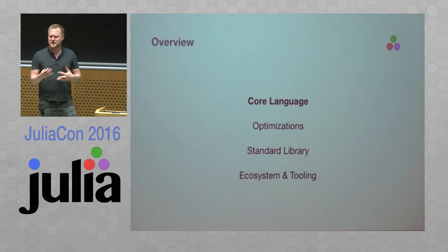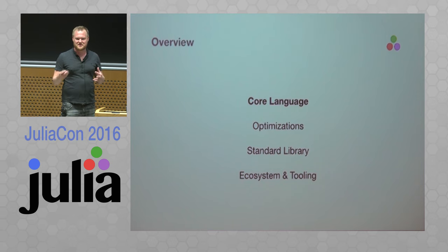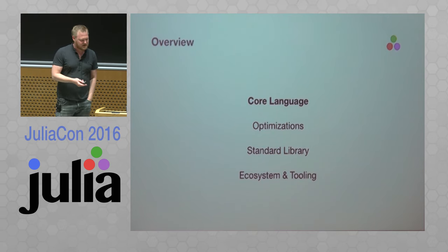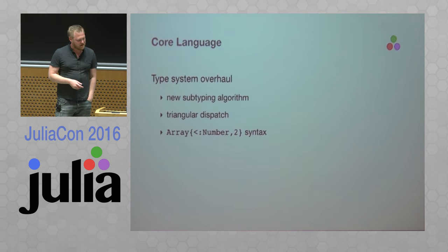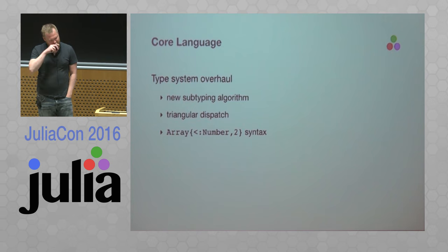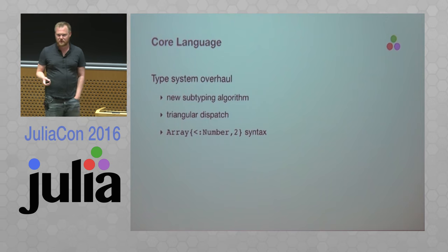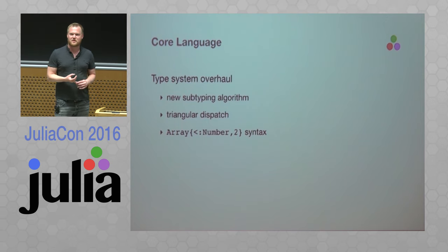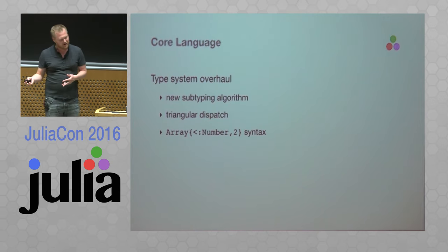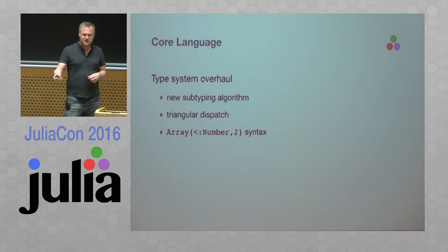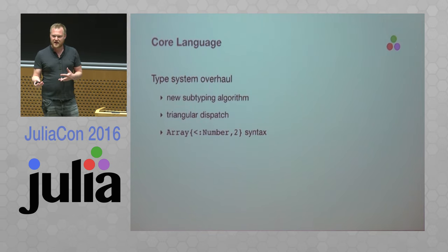These categories are not entirely well-defined — there's a little fuzz between them. The first core language thing to address, which Jeff has spent a huge amount of time on, is the type system overhaul. That includes a new subtyping algorithm — a new way of figuring out whether one of these complicated types is actually a subtype of another — and the ability to do triangular dispatch.